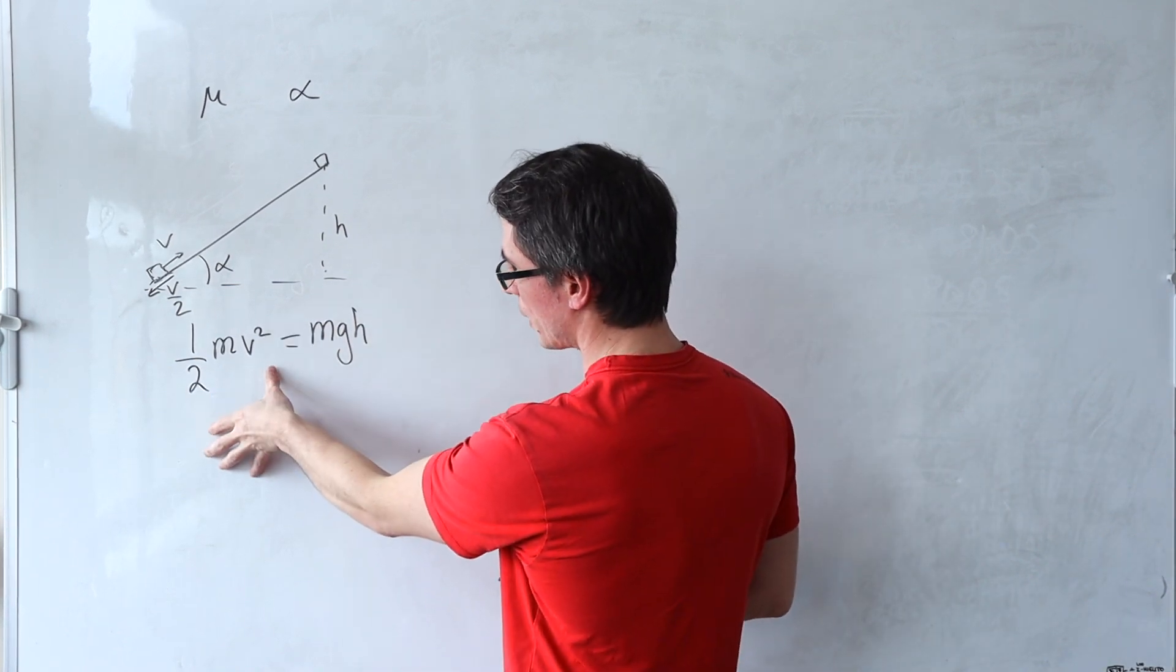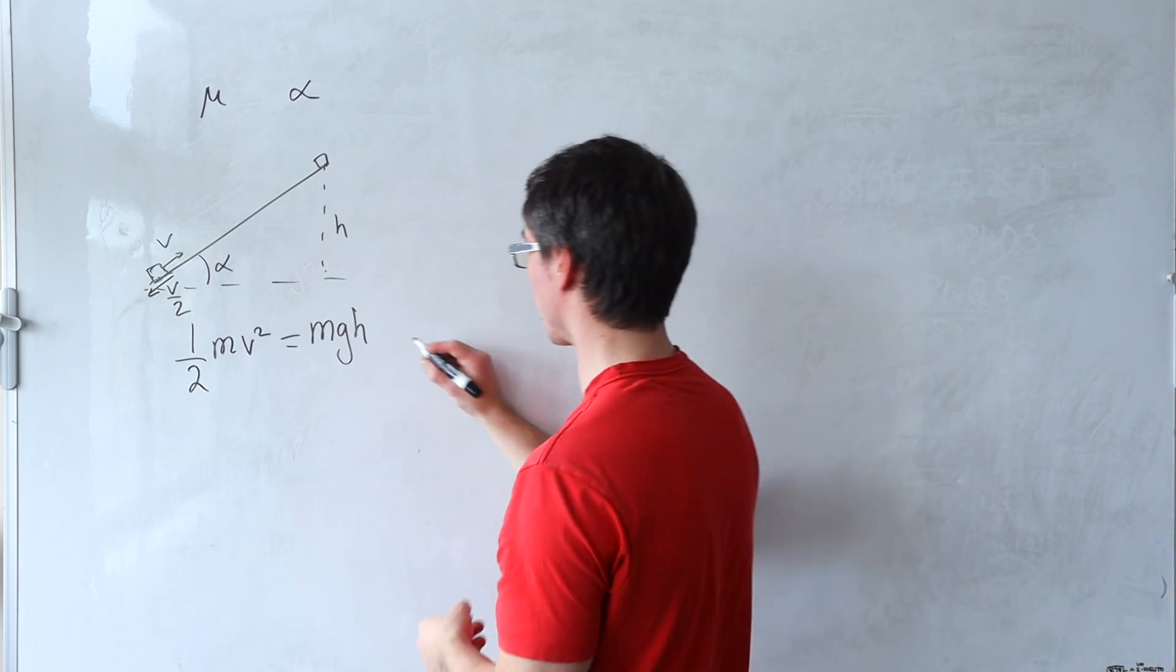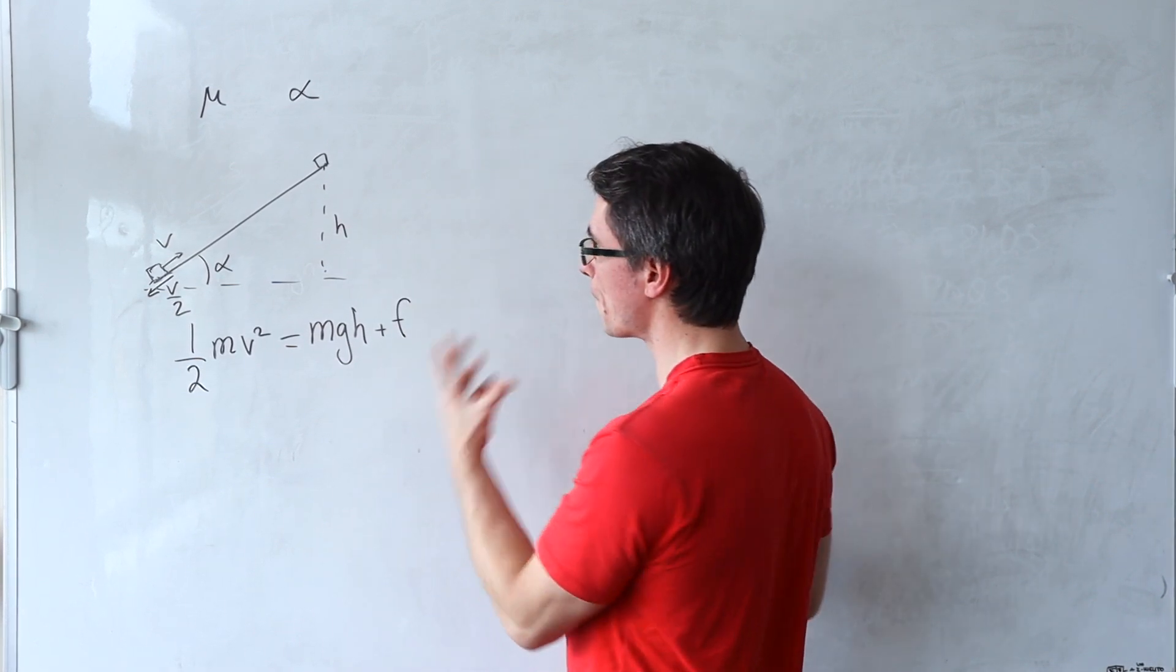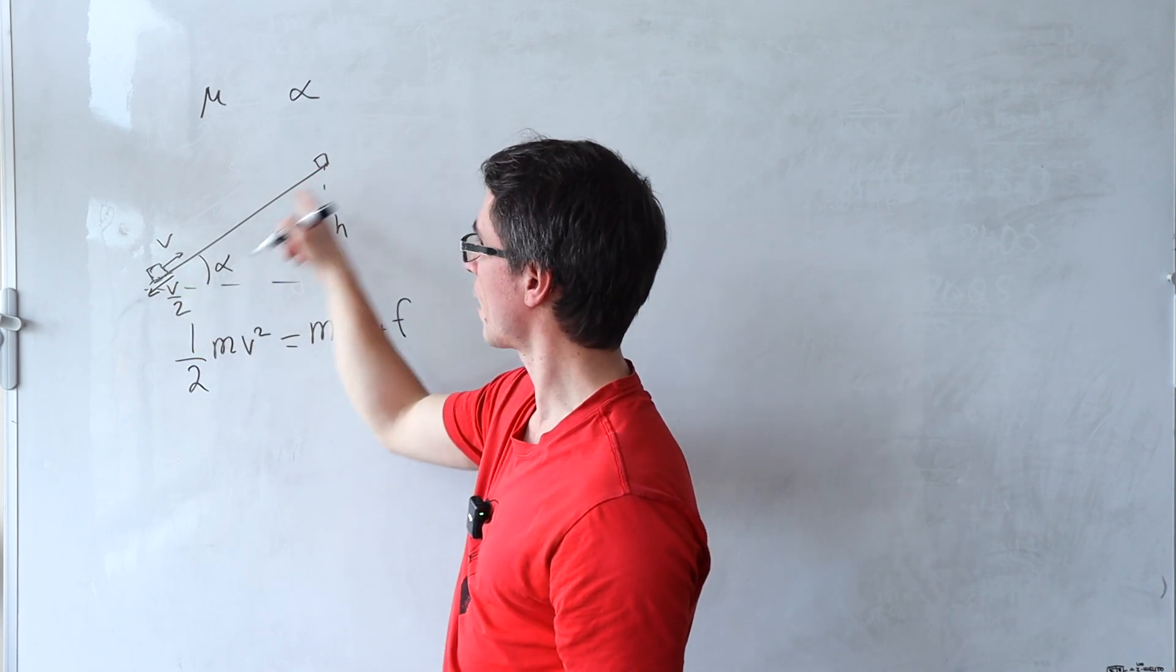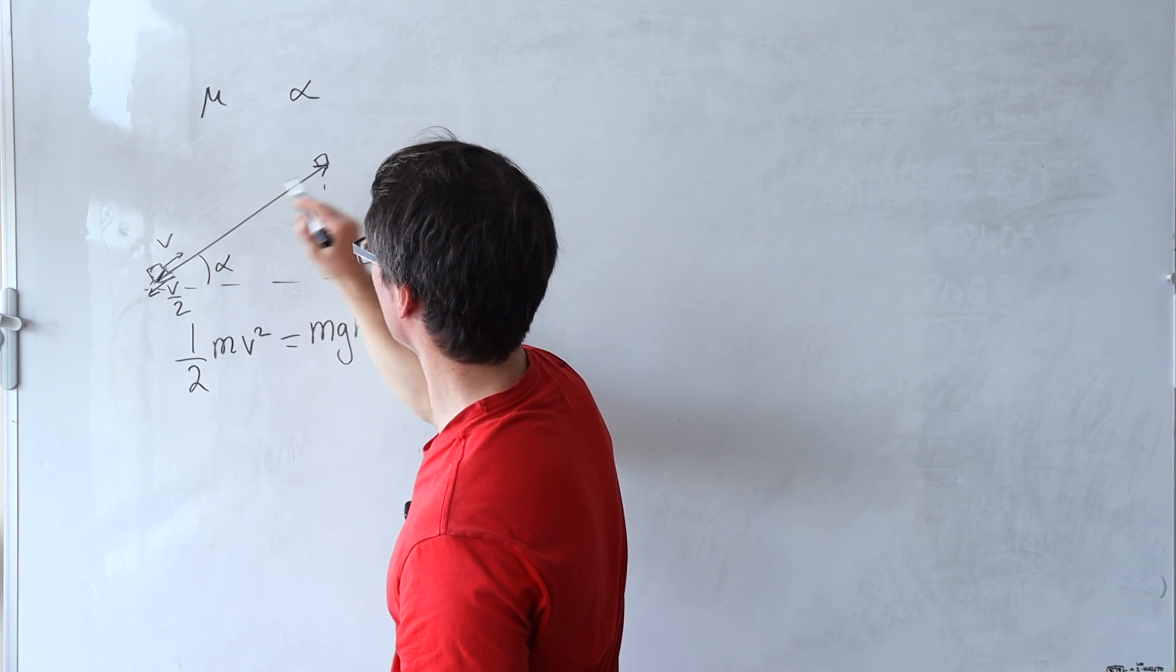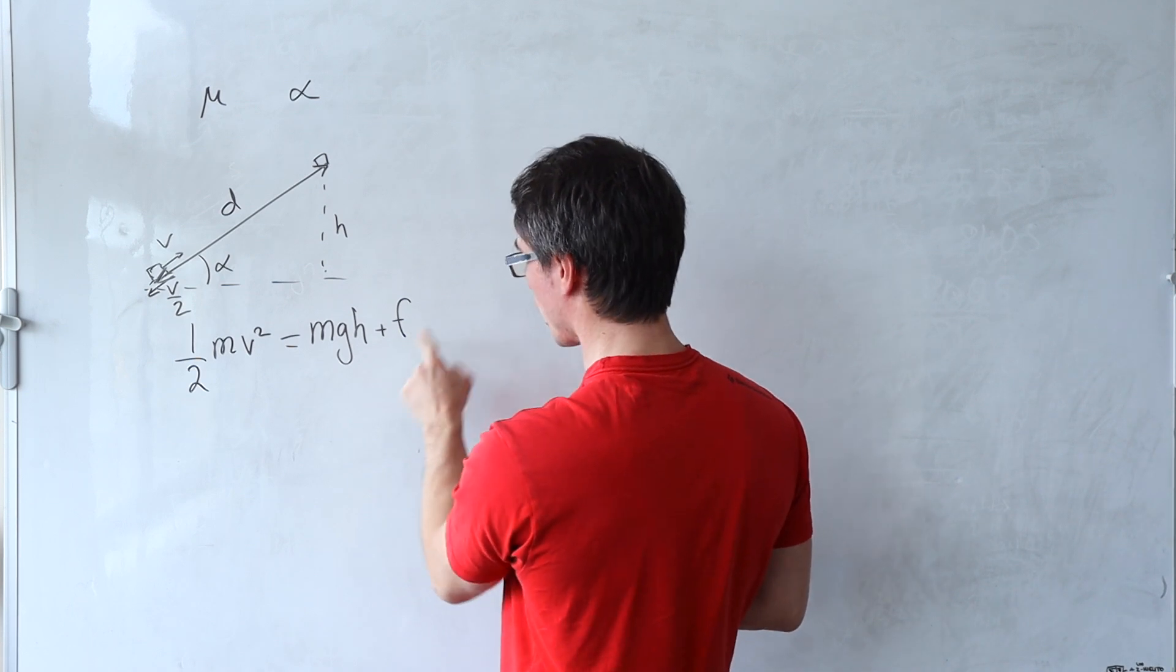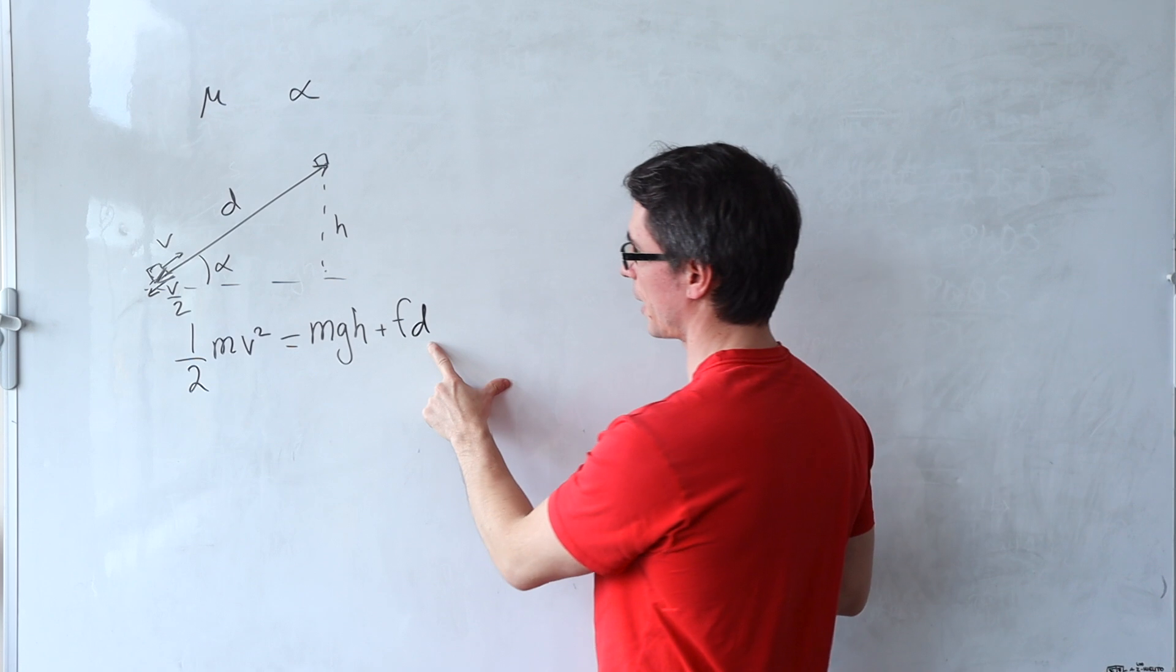But also some of this kinetic energy would have gone into work done by frictional forces. So we need to add in the frictional force. Let's say the frictional force is f multiplied by the distance that this object travels along the plane. I'm going to say that this distance here is d. Meaning that the work done by frictional forces from here to here will be equal to the frictional force which I've called lowercase f multiplied by that distance d.